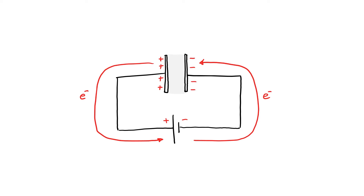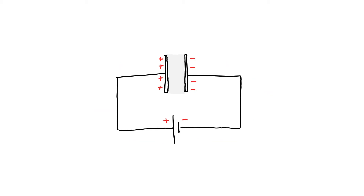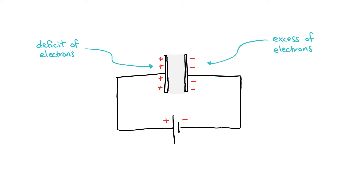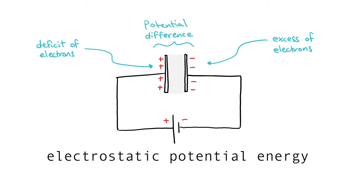The buildup of electrons makes this side of the capacitor negative. And remember, there is an insulating material in between so that electrons cannot pass through. Because this side is in deficit of electrons and this other side is in excess of electrons, the imbalance of charge causes a potential difference across the plate, which is why a capacitor can store electrostatic potential energy.